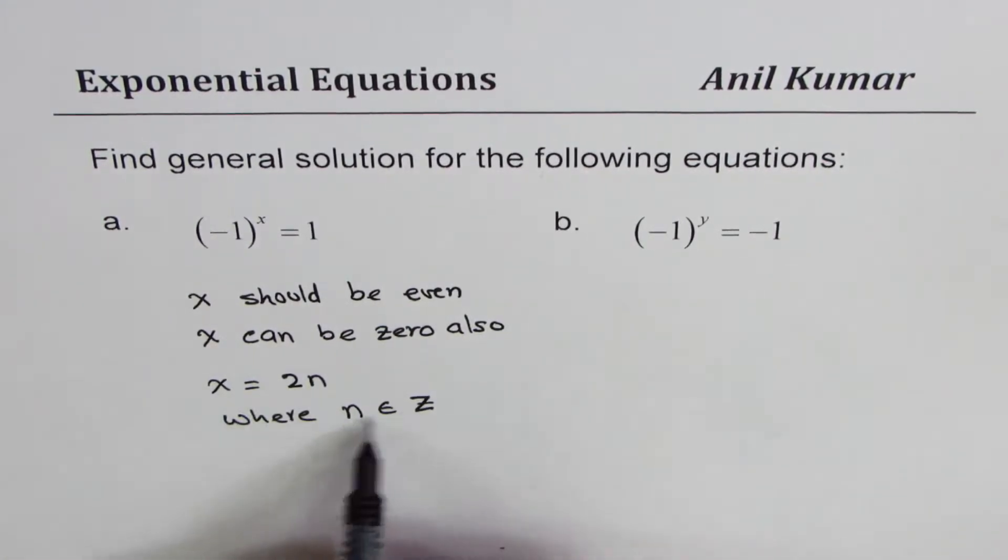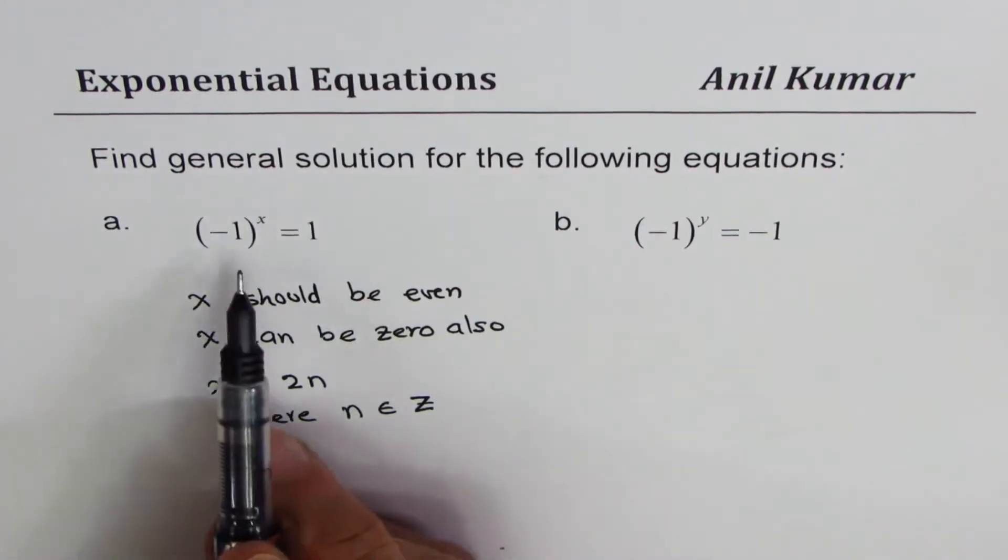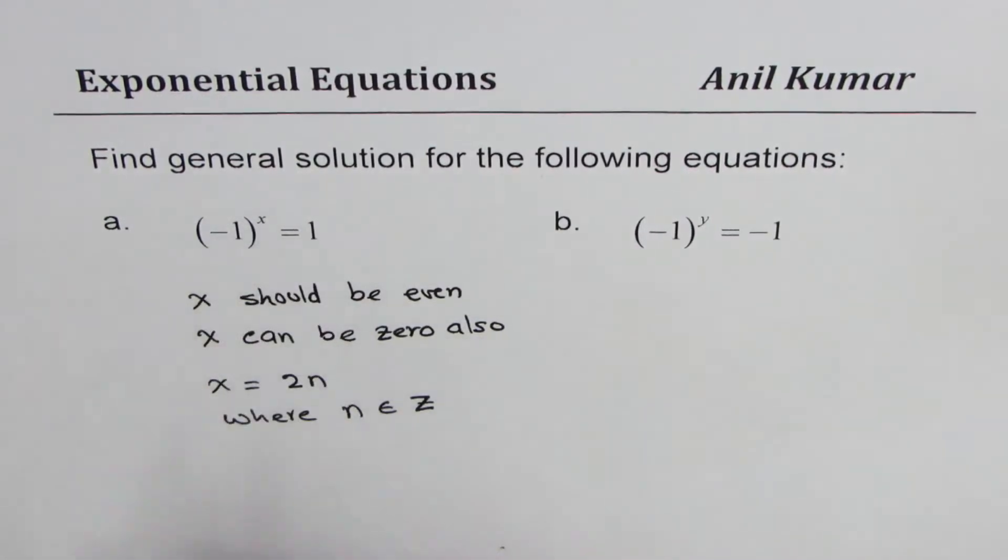So when I multiply any integer by 2, it becomes an even number, and even powers of -1 will be 1. So that becomes the solution for part a.